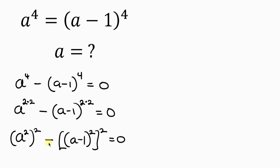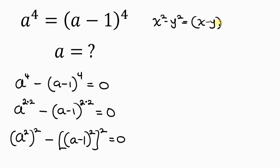Now we have an expression in difference of two squares. The difference of two squares rule states that x squared minus y squared can be expressed as x minus y times x plus y.